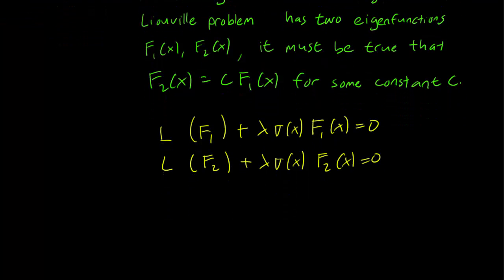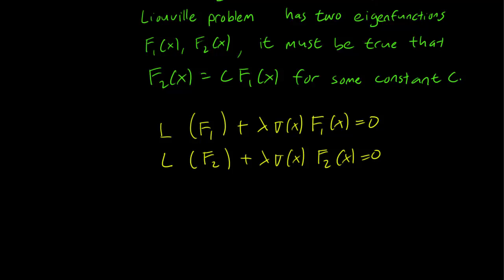Alright, now let's solve for lambda in both equations. The first equation gets us lambda equals L f1 divided by sigma x f1x. And the second equation, I'll be writing down this way: lambda equals L f2 over sigma x f2x.